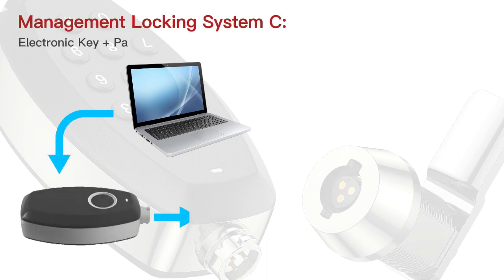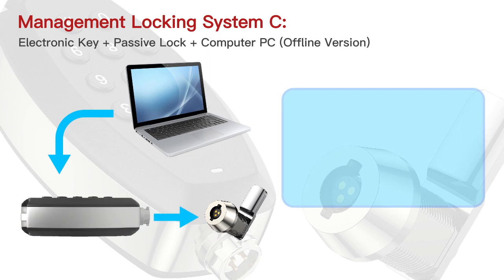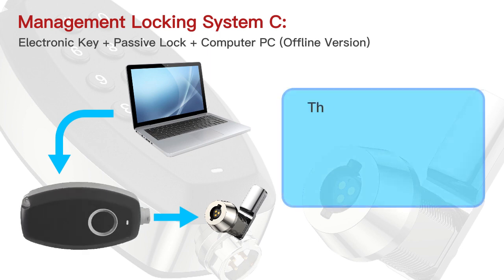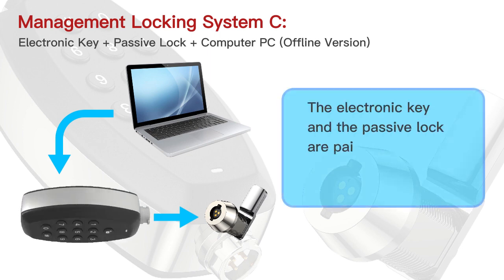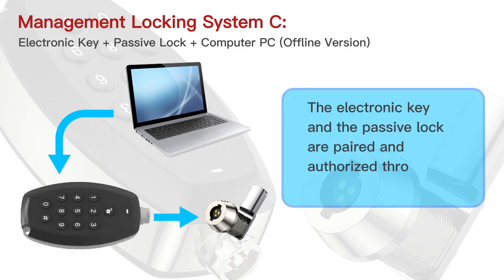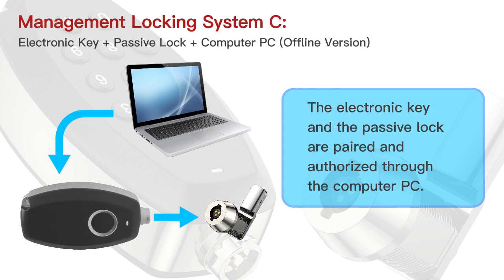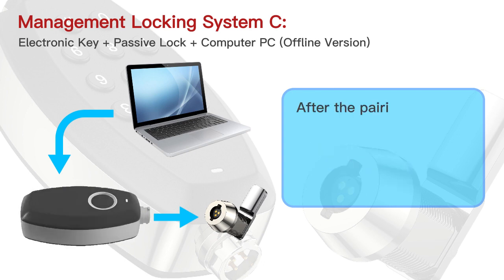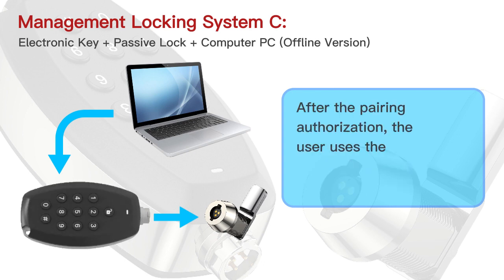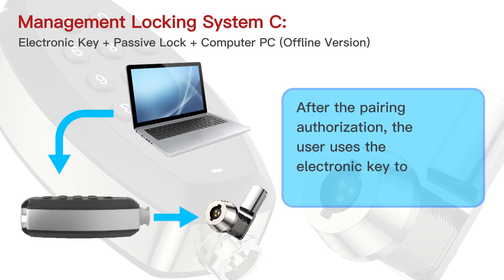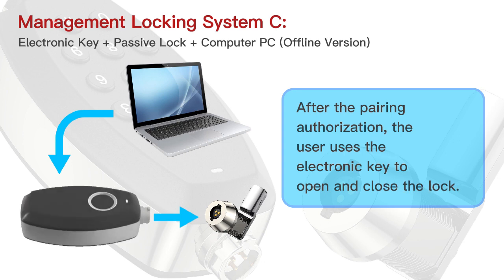Management locking system C: electronic key plus passive lock plus computer PC, offline version. The electronic key and the passive lock are paired and authorized through the computer PC. After pairing authorization, the user uses the electronic key to open and close the lock.